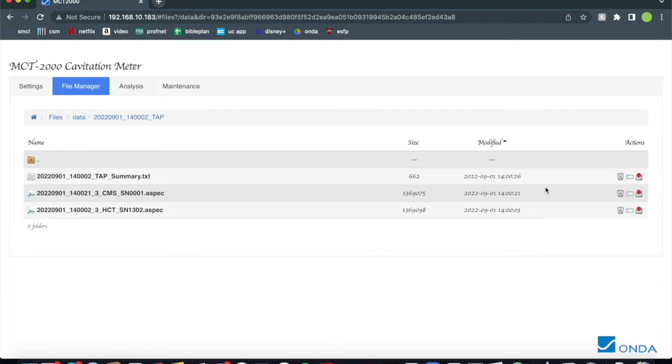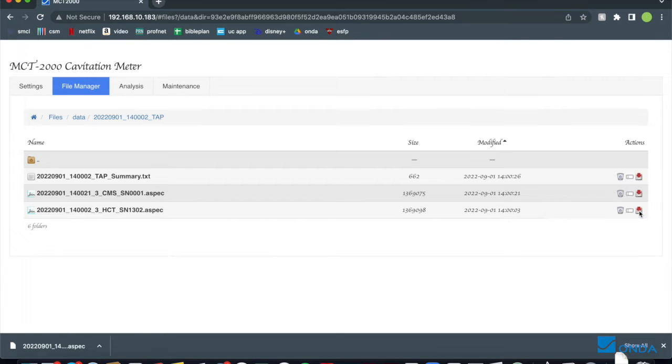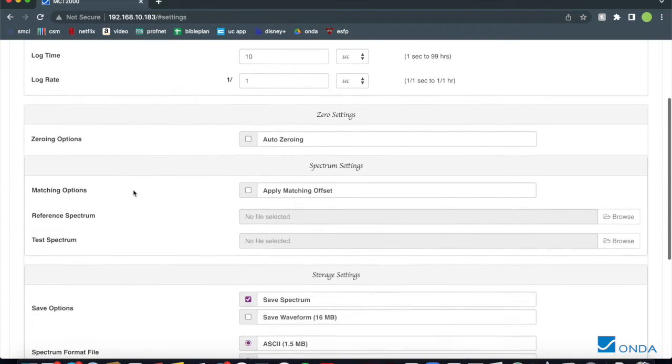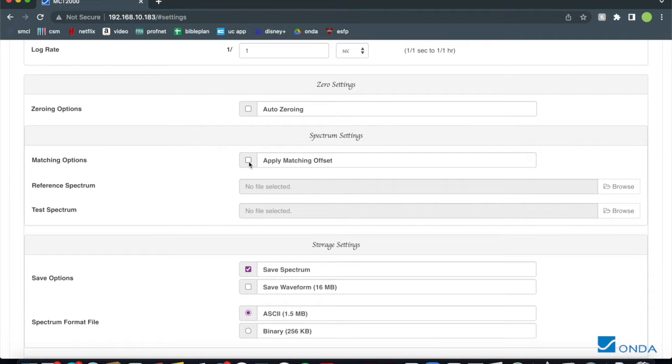Download the files locally to your laptop. Go to the Settings tab and click on the Apply Matching Offset checkbox. Upload the Spectrum files.